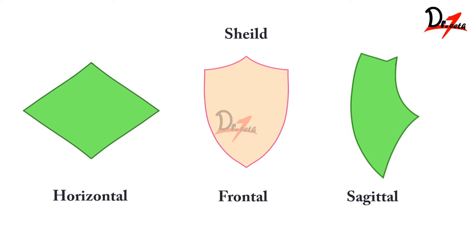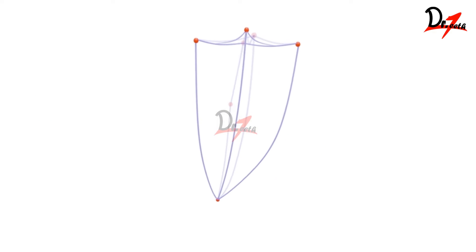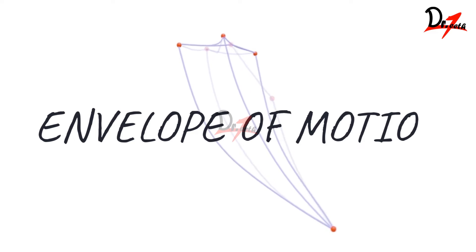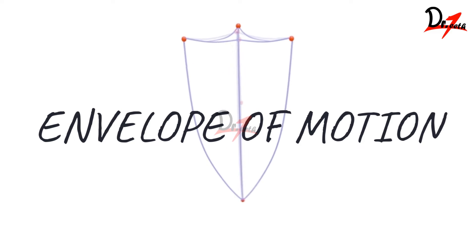When we see the mandible from the sagittal view, we find a characteristic beak tracing. When the mandible makes all the extreme border movements viewed from the sagittal plane, we get a characteristic peak tracing. When we look at the horizontal plane, we get a characteristic diamond tracing — connecting all those border points gives us the diamond shape. When we combine all three — frontal, sagittal, and horizontal — we get the envelope of motion.